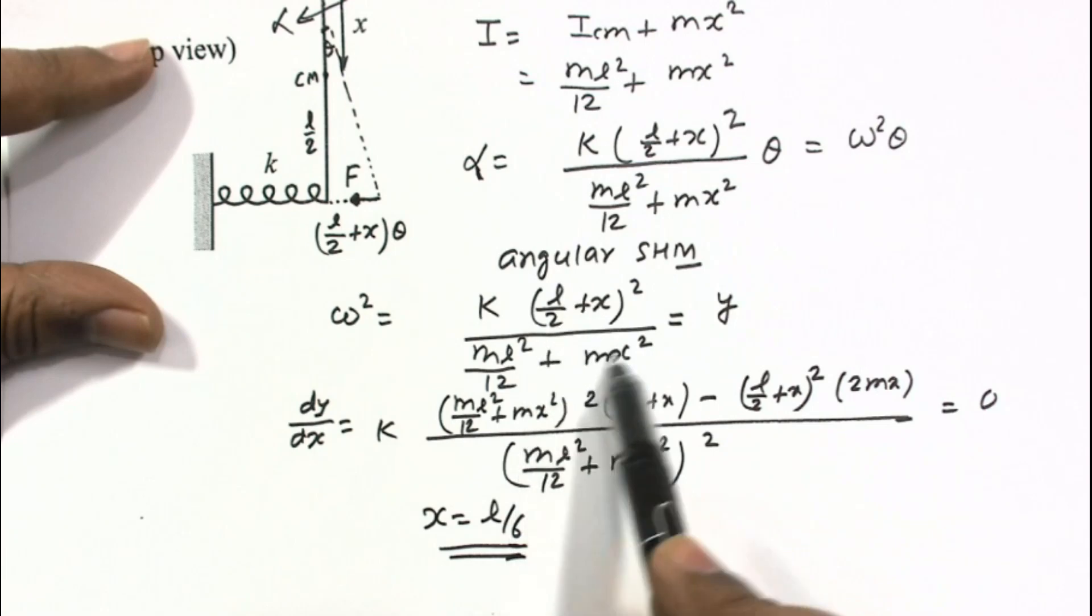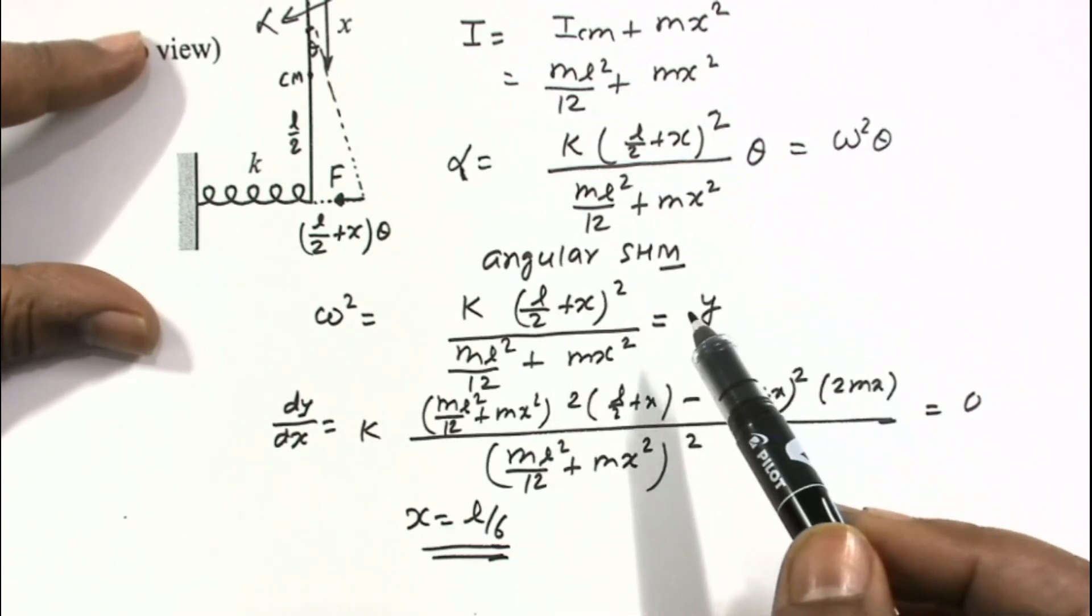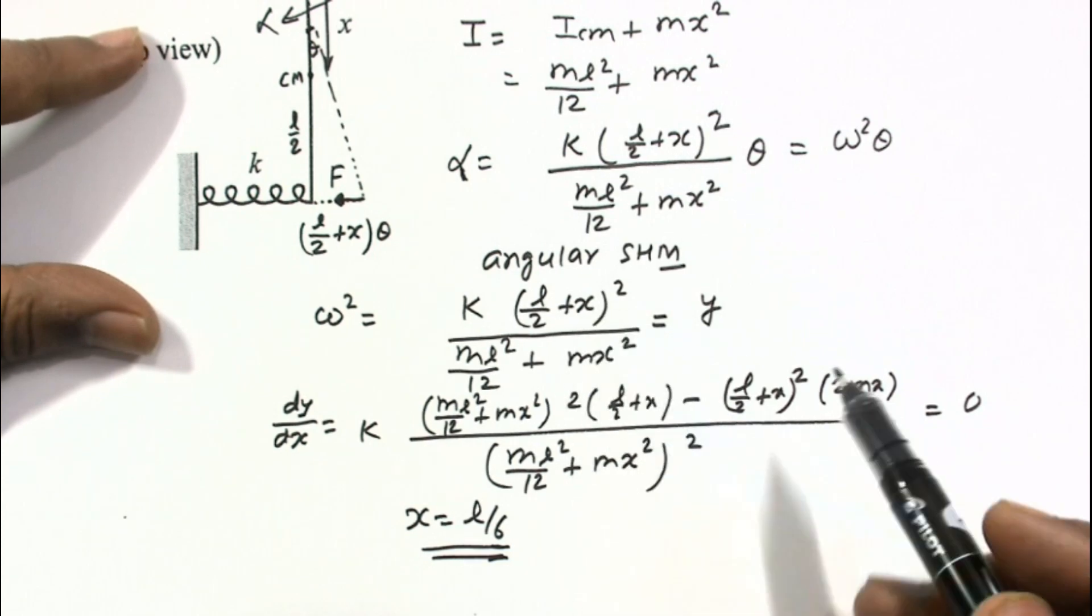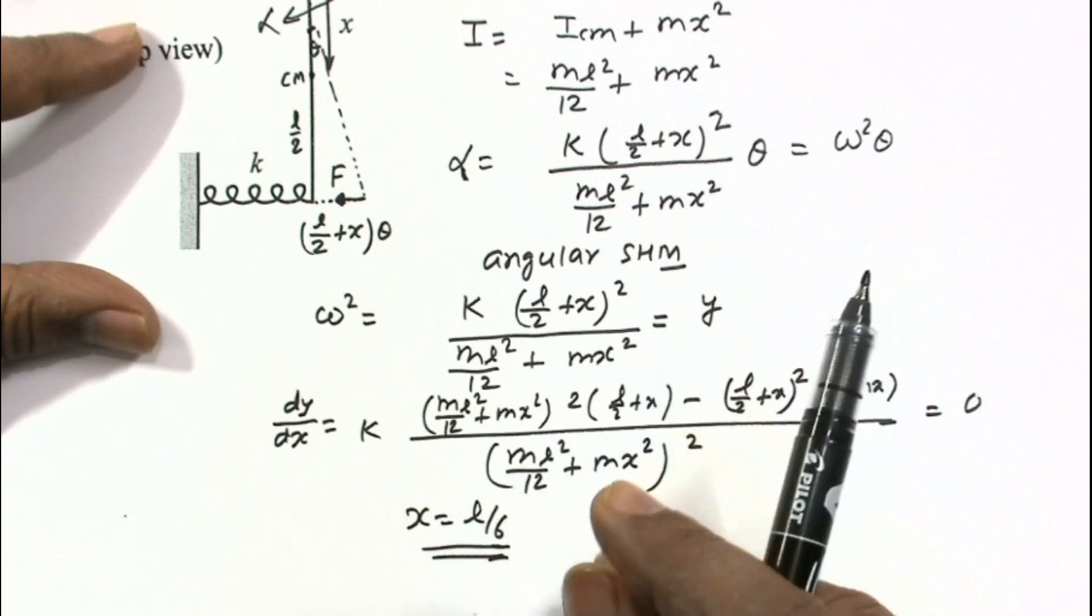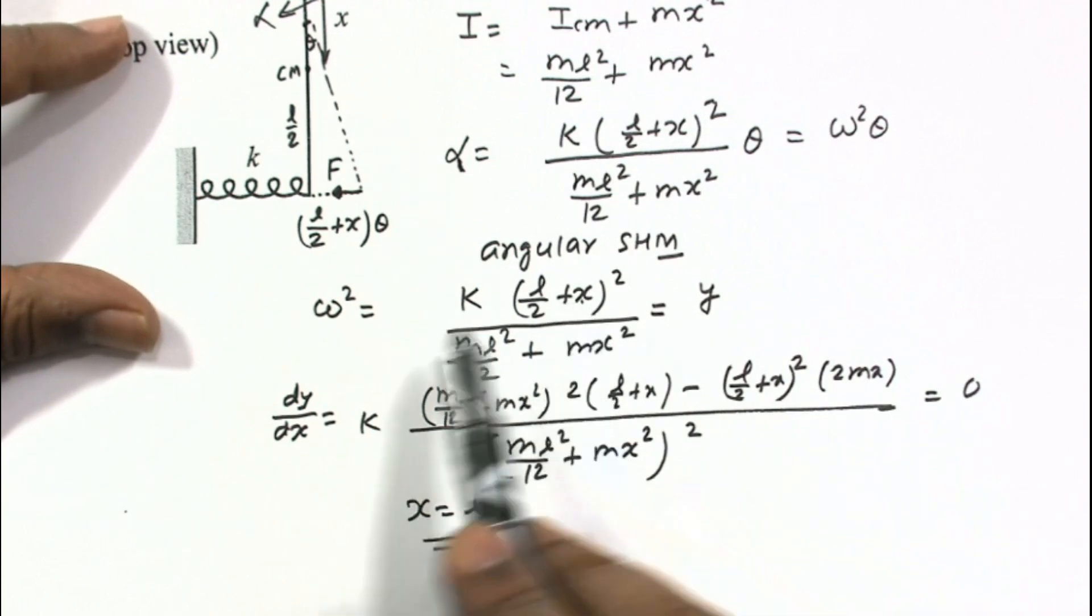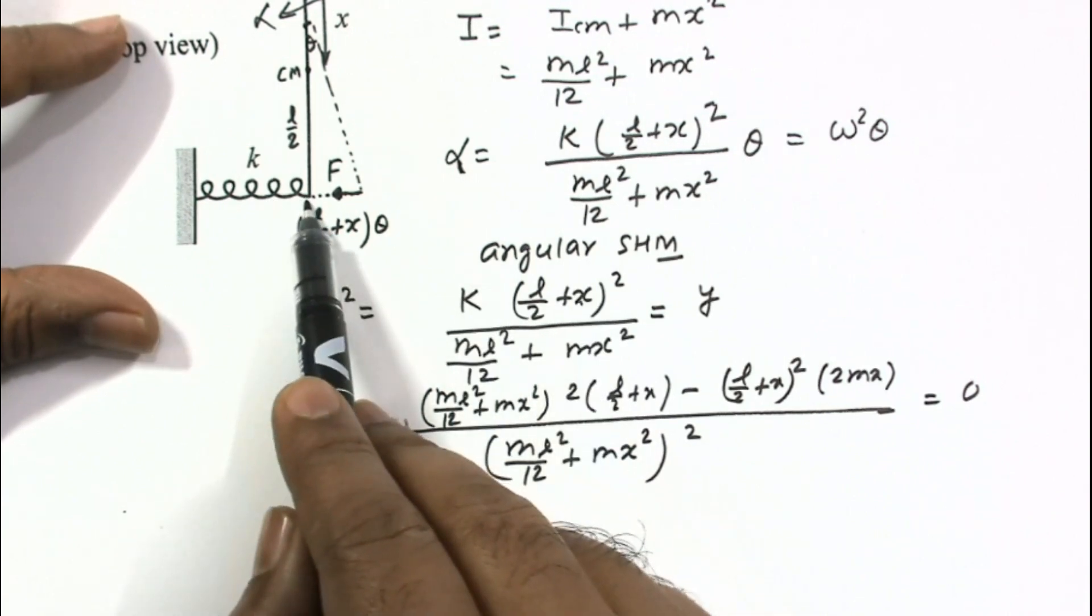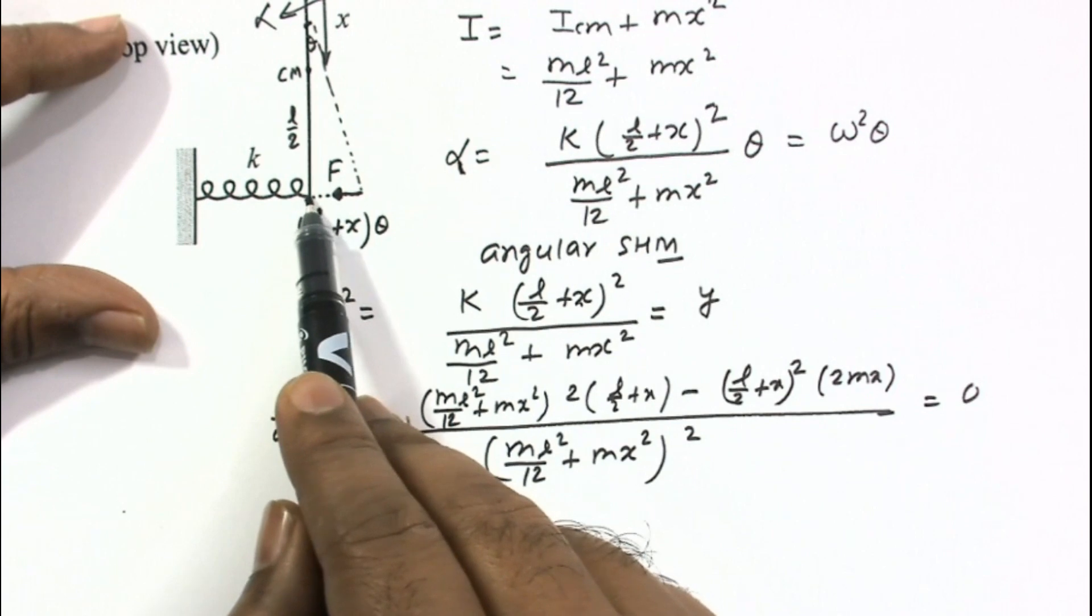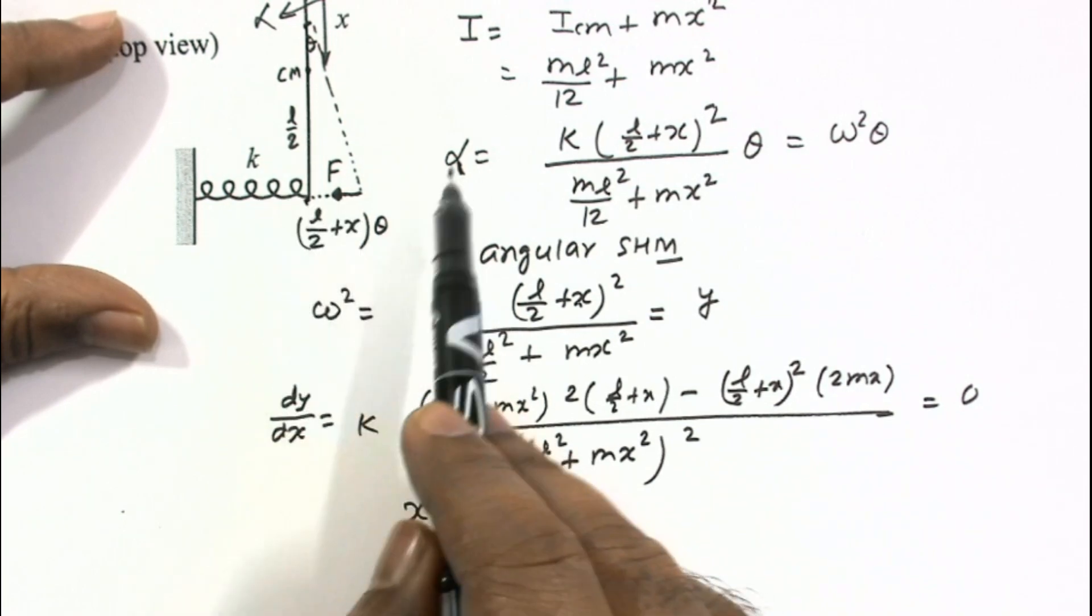If in this expression we put X as, sorry, if we put X in this expression as minus L by 2, I am finding the minimum frequency. If this is maximum frequency, then we should also think about what is the minimum frequency which is possible. If we put X is equal to minus L by 2, then this is 0 and X is equal to minus L by 2 will be location at this point. If the pivot is here, so there will be no restoring torque due to this spring. So there will be no oscillation and omega will be 0.